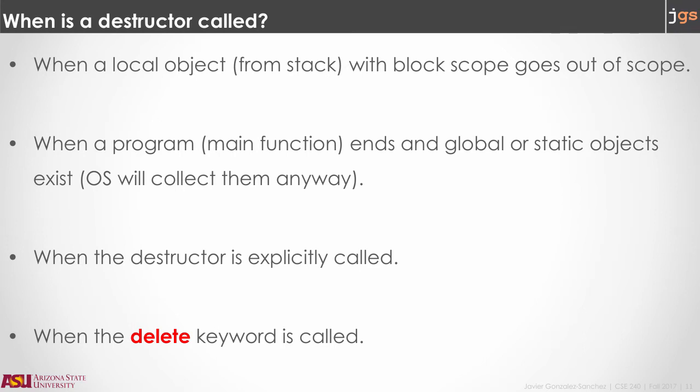There are four ways to call the destructor of a class. First, if you create an object as a local variable inside the curly brackets of any method, the destructor is called when the method returns. Second, if you create objects as global or static variables, the destructor is called when the program ends. Third, you can call the destructor explicitly because it is a method. Finally, destructors are called if you use delete, which we will talk about next.